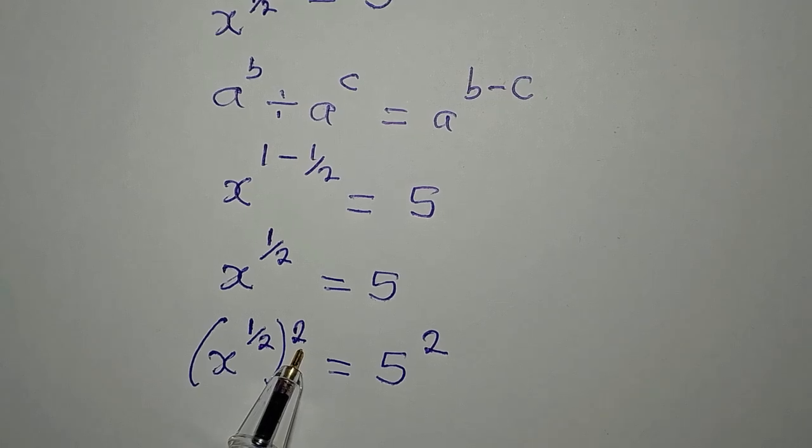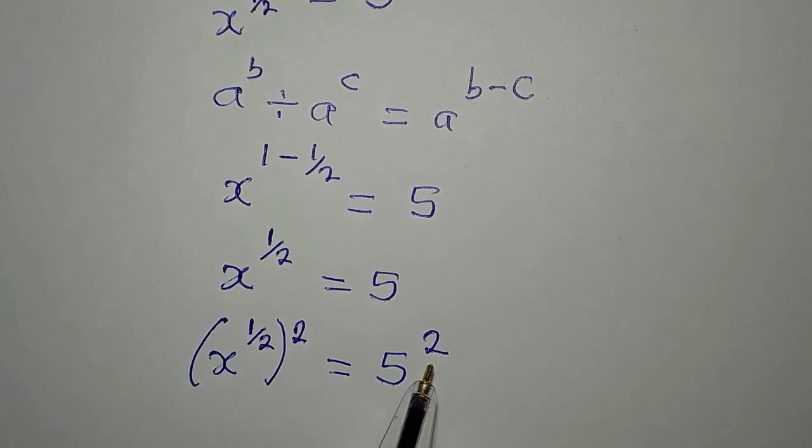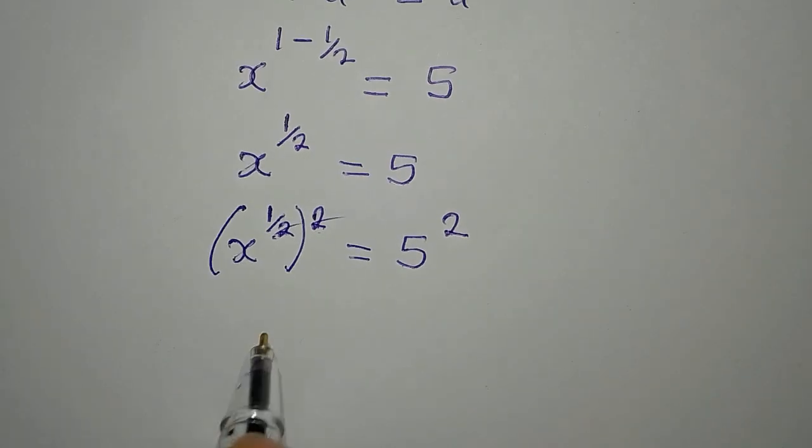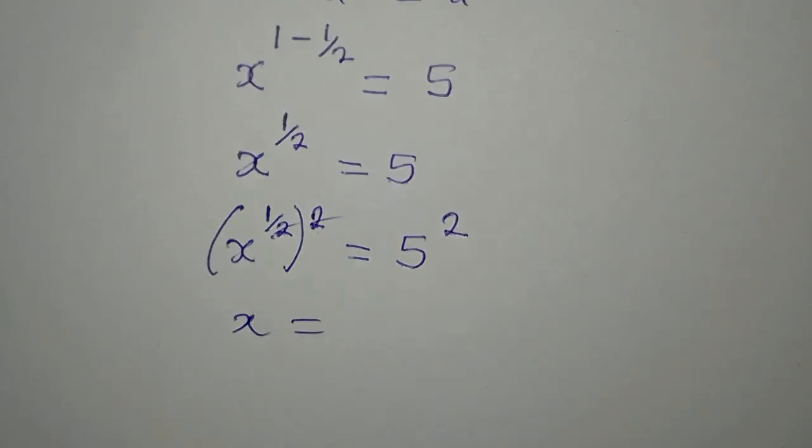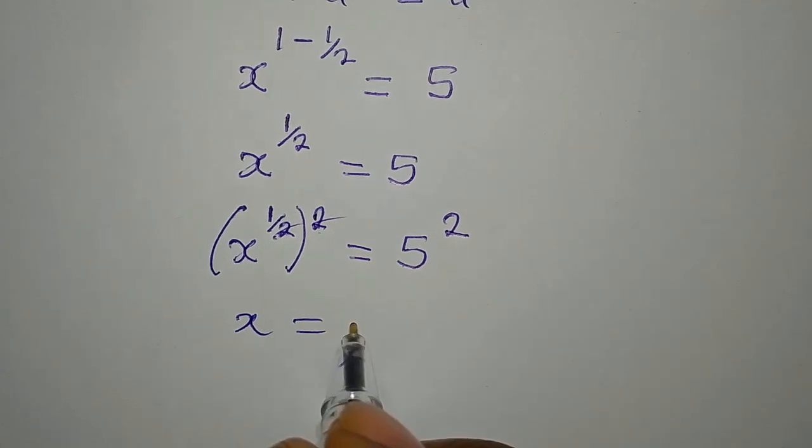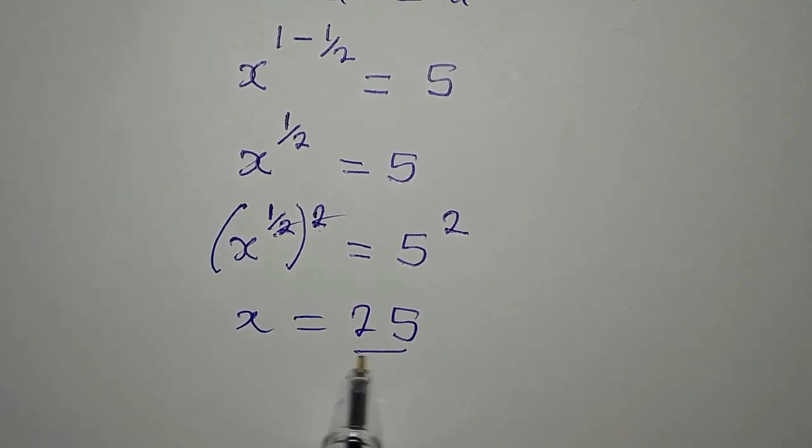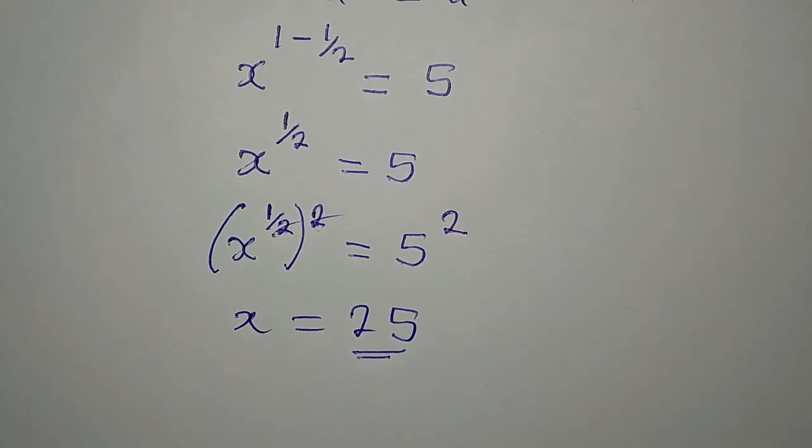Since I introduced the square on the left, I have to introduce the same square on the right. So this will go with this now. So x is equal to 5 squared. And 5 squared is 25. So this becomes the value of x if I use the first method.